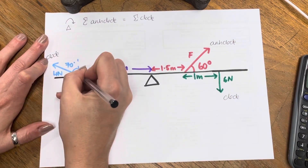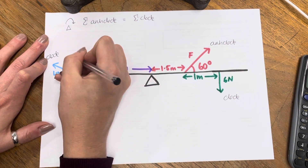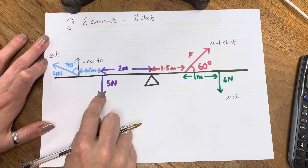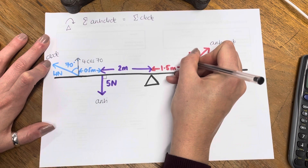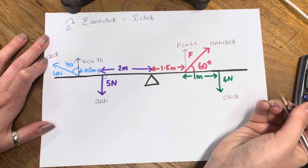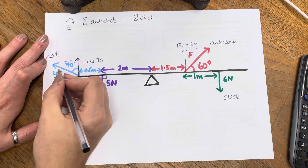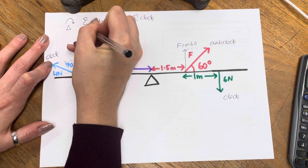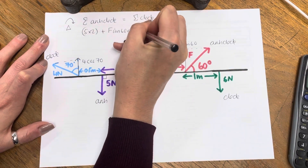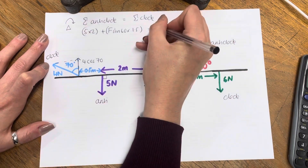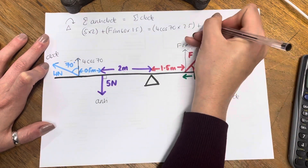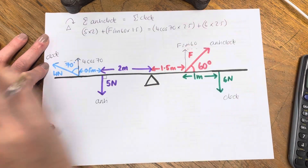Let's split each of these forces. This force — I've made it a little bit different here. You might think it's always sine, but here I've given the angle to the perpendicular, so this would be 4 cos 70. 5 Newtons is fine because that's already perpendicular. Here I care about the perpendicular part, which would be F sine 60 — back to that rule. And this one is 6 Newtons, so that's fine. The anticlockwise moments: 5 times 2, plus F sine 60 times 1.5.